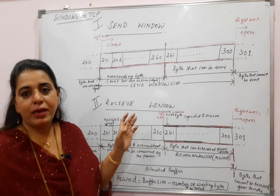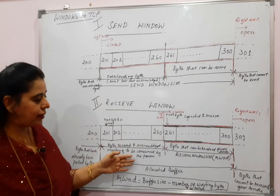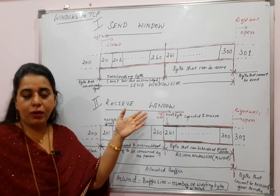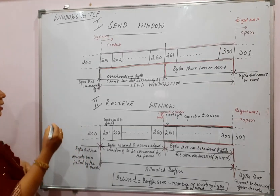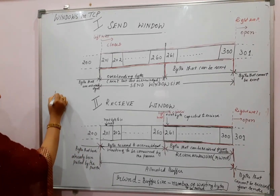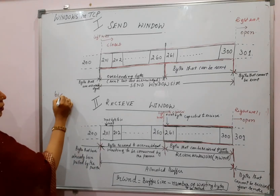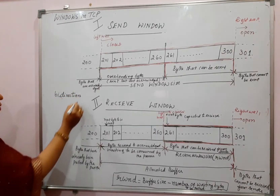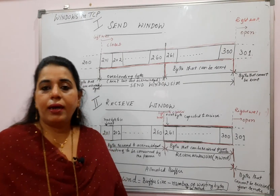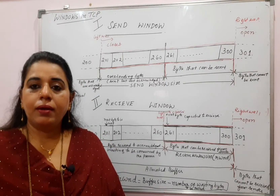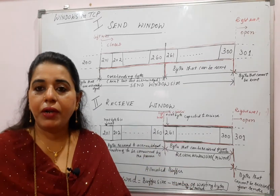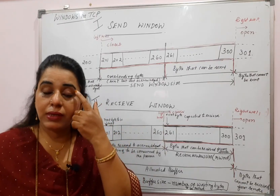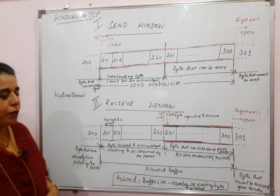I have given an illustration here for the send window and the receive window. But before I explain the different components in each of these windows, TCP supports bidirectional communication. I told you this when I was explaining the services of the transport layer protocol, transmission control protocol.